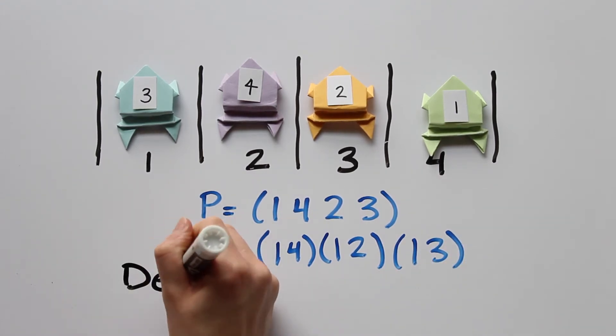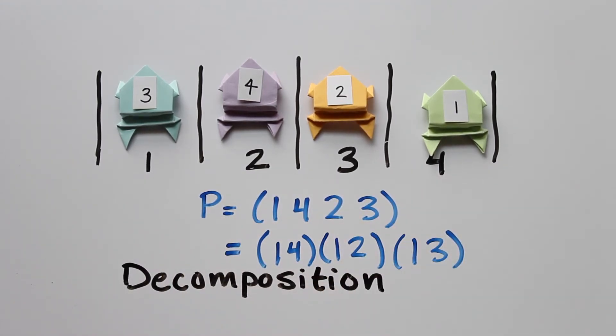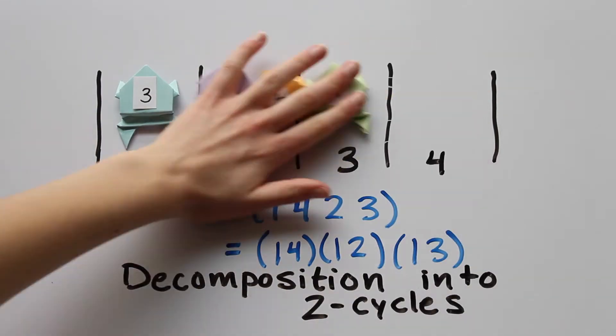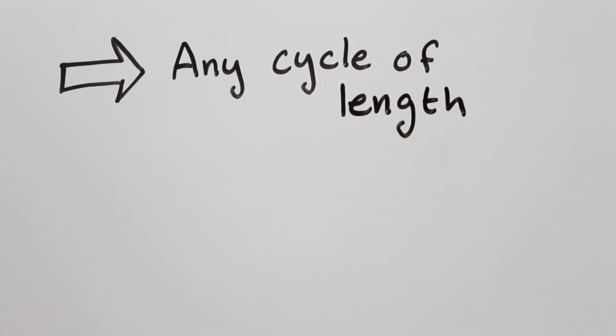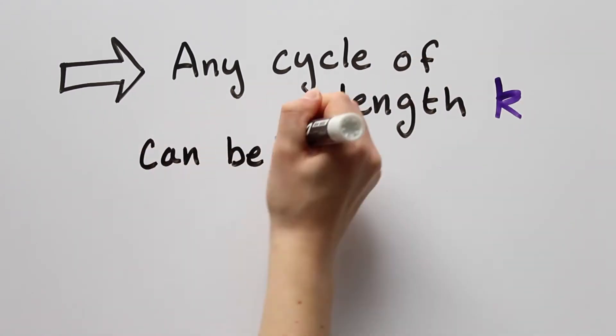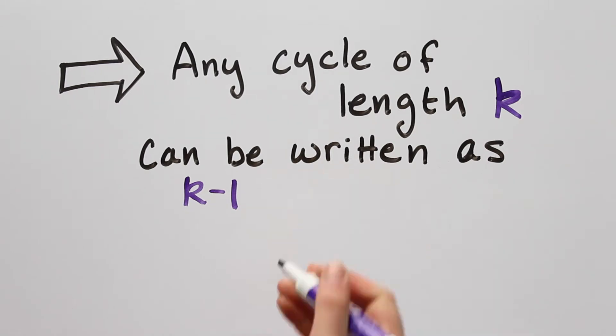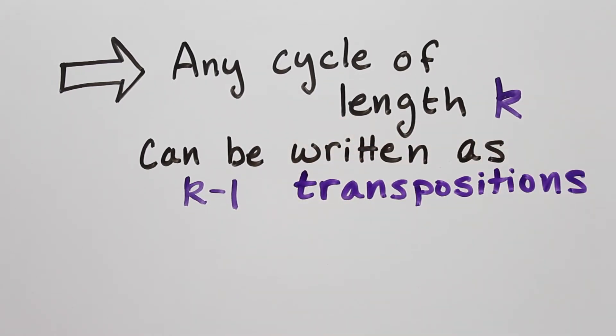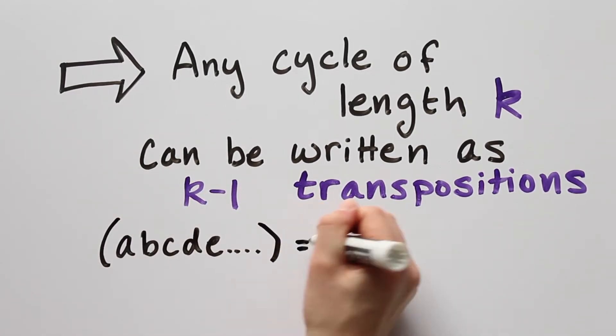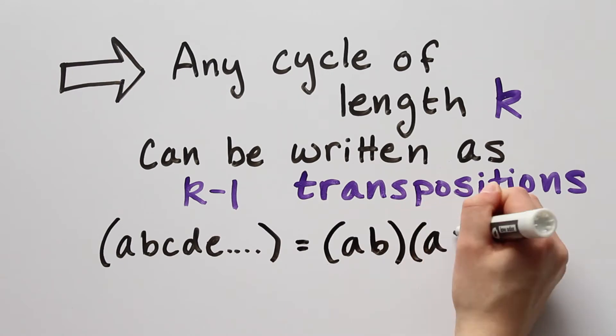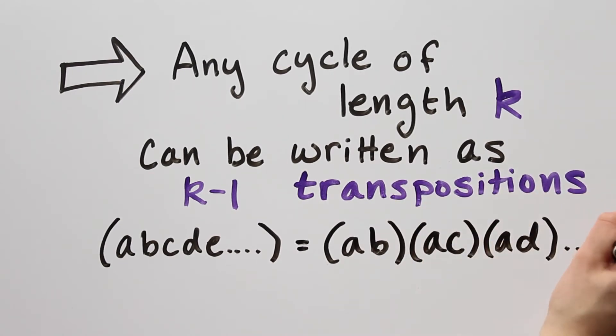We call this a decomposition of permutation p into two cycles. In general, if you have a cycle of length k, you can always write it as the product of k-1 switches, or transpositions. We can do this by pairing the first element with each of the other elements in the cycle. For instance, if we have a cycle a, b, c, d, e, dot dot dot, then we can write this as a, b, times a, c, times a, d, times a, e, and so on.